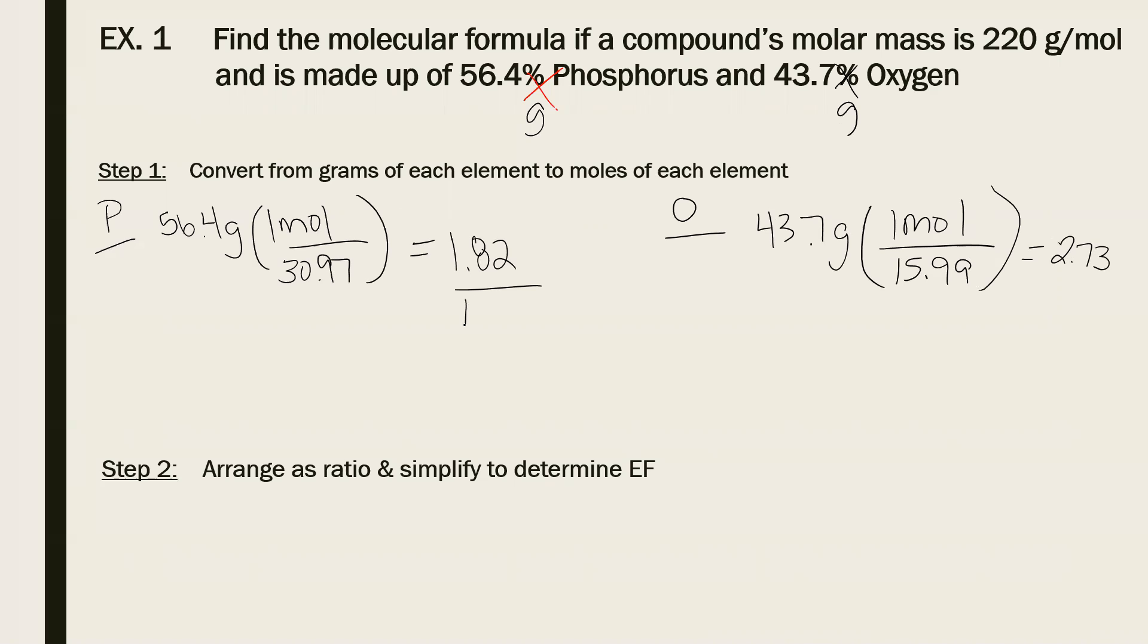Step two is then divide by the smallest number between the two. This obviously equals one, dividing these gives me 1.5. Uh-oh. I can't say two, it's too far away. So I have to think what times 1.5 will get me very close to a whole number.